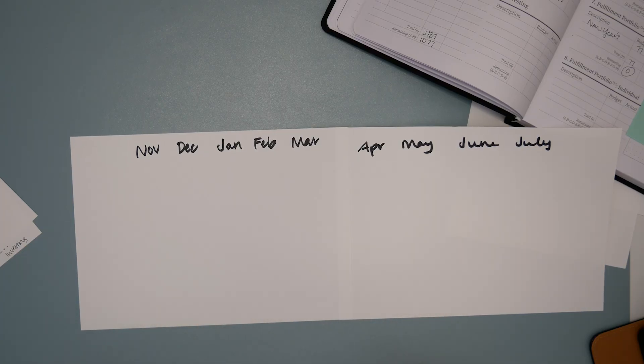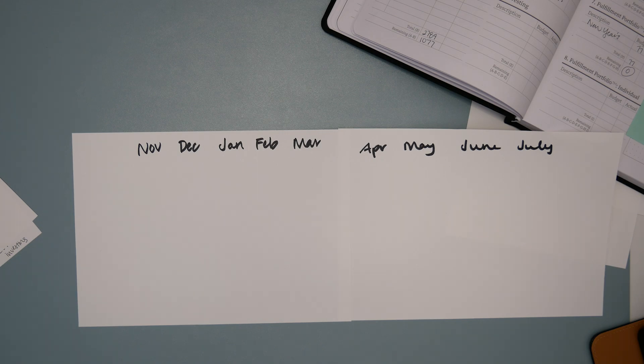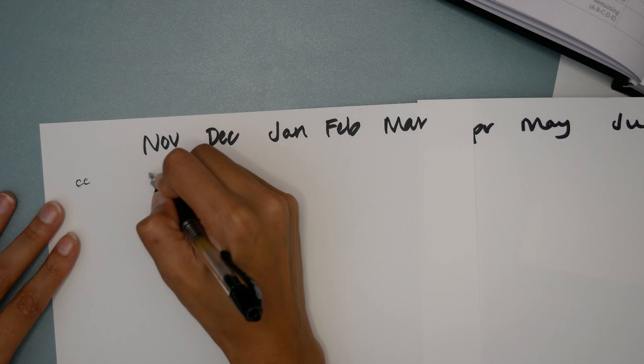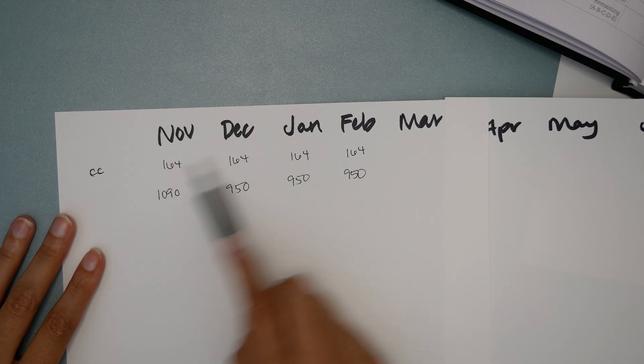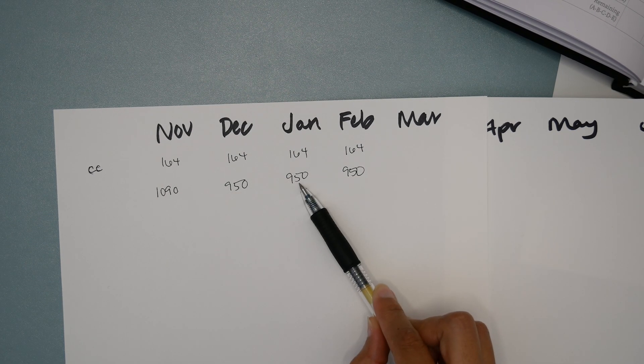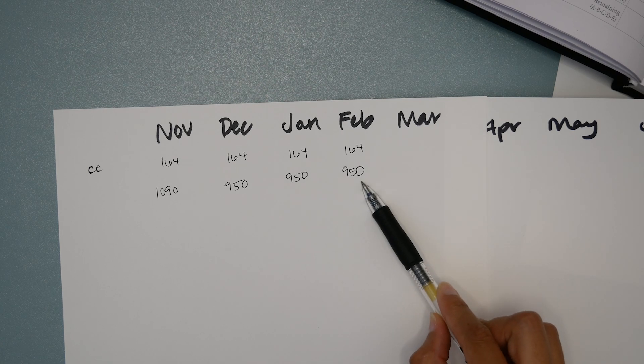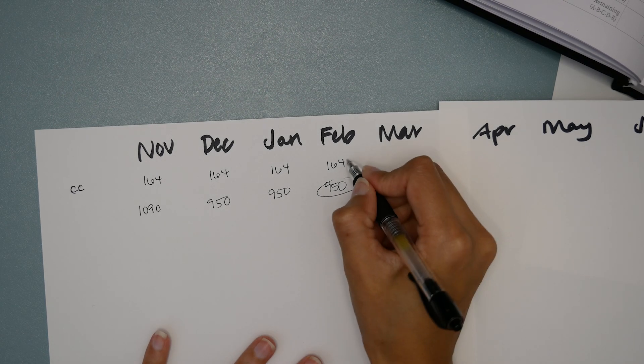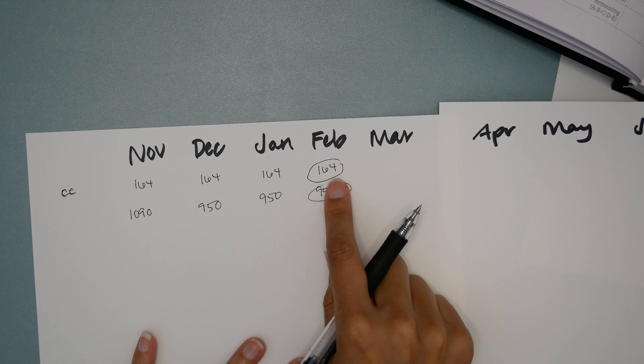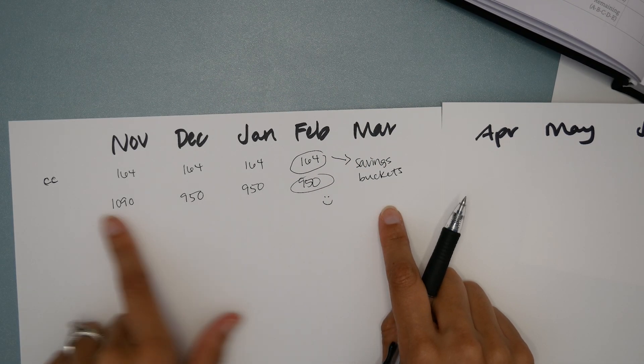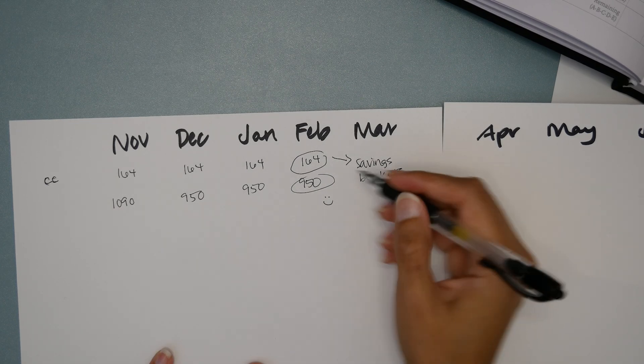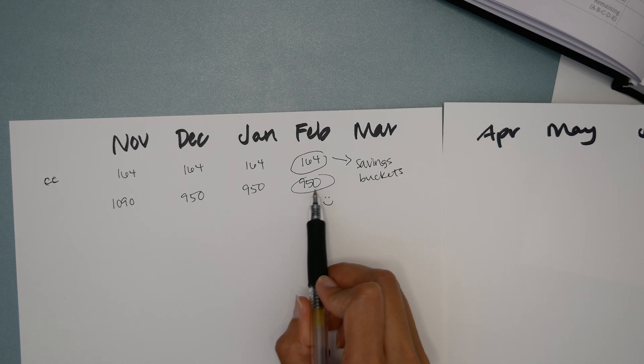The last thing I want to show you is the debt payoff plan for the credit card and that high interest personal loan. So let's first look at the credit card. I'll first list out the minimum payments. In terms of extra payments though, $1090 in November, $950 in December. So those were the four budgets that you saw me put together. And then assuming we can keep that pattern up, an extra $950 would go towards the credit card in January and another $950 in February. And it's at this point that the card would be paid off. With this $164 starting in March, she doesn't need to put that $164 towards a credit card. She can put it somewhere else and I would recommend that she put that towards savings buckets.